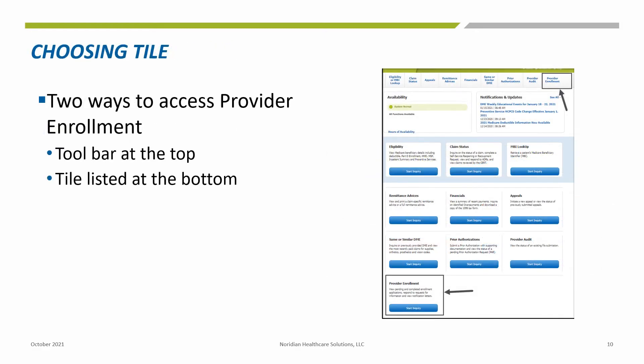As we can see by the different tiles, the NMP is a way to verify eligibility, check claim status, and submit your reopening or redetermination request, as well as check your provider enrollment. CMS and Neridian strongly encourage providers to utilize this option in the NMP.